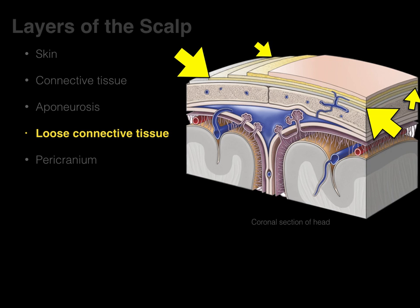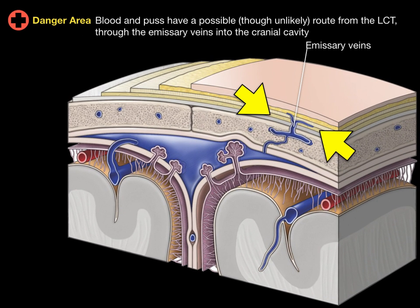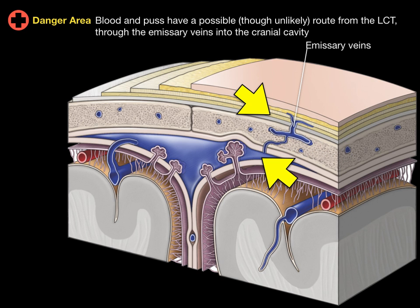The loose connective tissue layer — also called areolar connective tissue — deep to the aponeurosis is where blood, pus, and infection can spread all across the scalp. This fourth layer is the danger area because pus and infection have a possible, though unlikely, route through the emissary veins into the cranial vault, potentially causing an infection like meningitis.